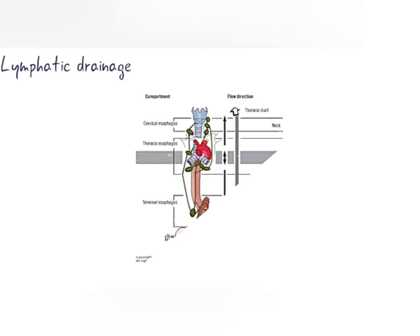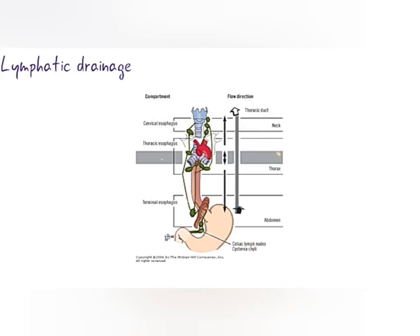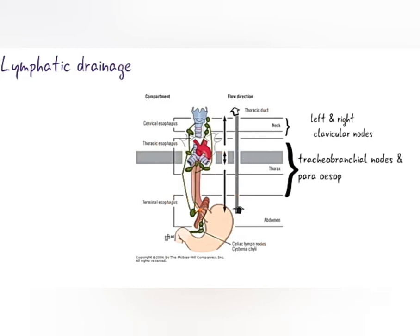At last we see the lymphatic drainage. The upper esophagus drains into the left and right cervical nodes. The middle esophagus drains into the tracheobronchial nodes and paraesophageal nodes. The lower esophagus drains into lymph nodes along the lesser curvature of the stomach and then into the celiac nodes.